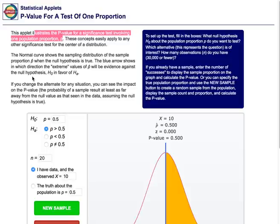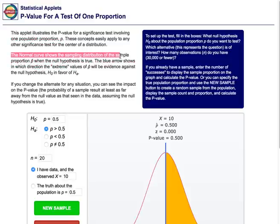As we continue to read the instructions we can see that the normal curve shows the sampling distribution of the sample proportion p-hat when the null hypothesis is true. In other words, this shows us what values are possible for a sample proportion and how often they would occur if the null hypothesis were actually true.